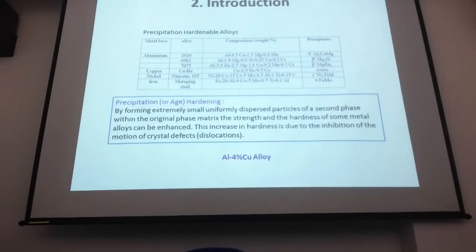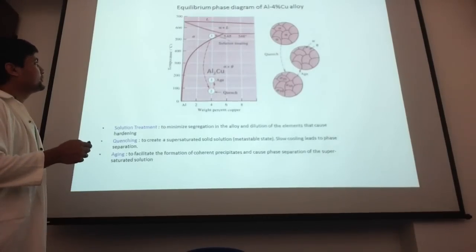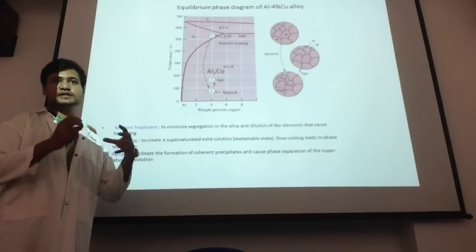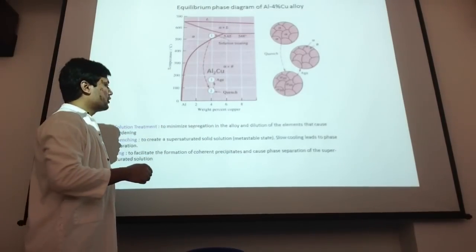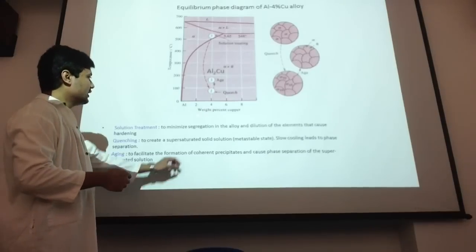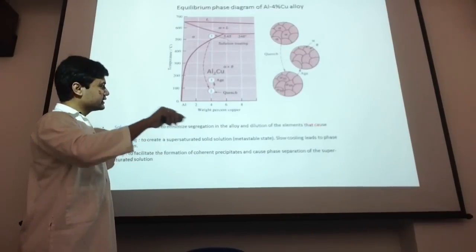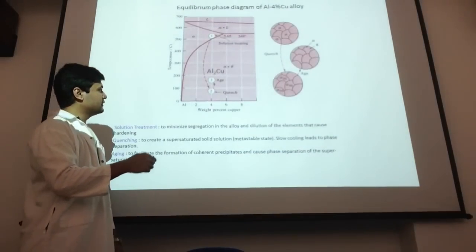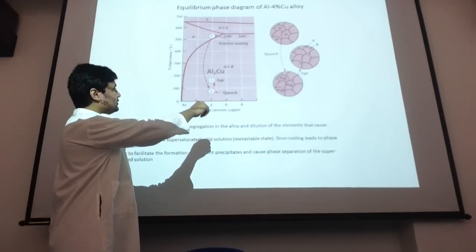We'll be using the aluminum 4% copper alloy today. This is the equilibrium phase diagram of that alloy — just a section showing the aluminum-rich end. You can see aluminum at 100%, 98%, 96%, 94%, and so on, with increasing weight percent copper on the x-axis. We are positioned along the 4% copper line of the phase diagram.